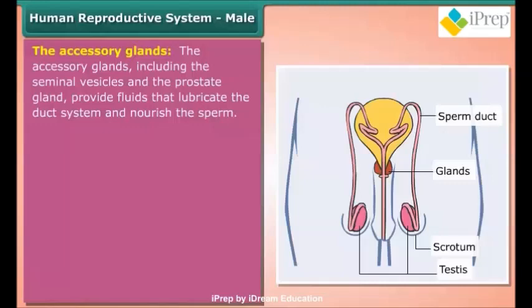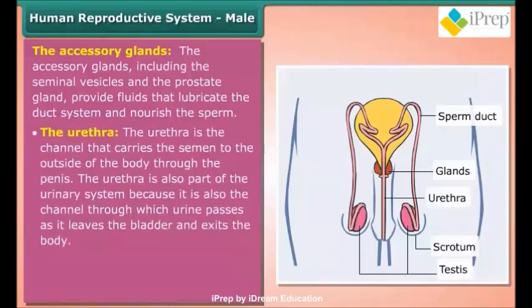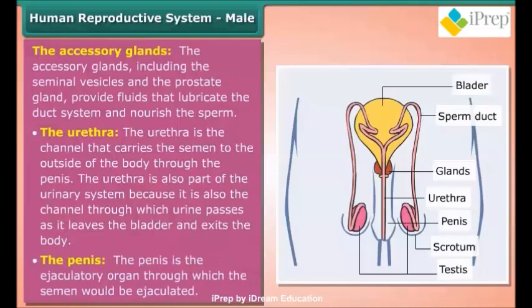The accessory glands, including the seminal vesicles and the prostate gland, provide fluids that lubricate the duct system and nourish the sperm. The urethra is the channel that carries the semen to the outside of the body through the penis. It is also part of the urinary system, as it is the channel through which urine passes as it leaves the bladder and exits the body.